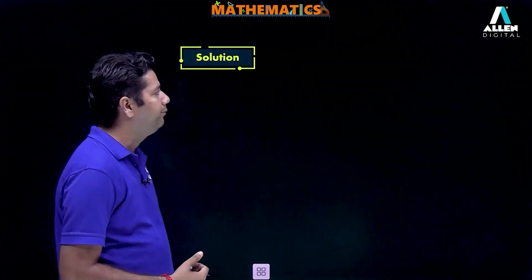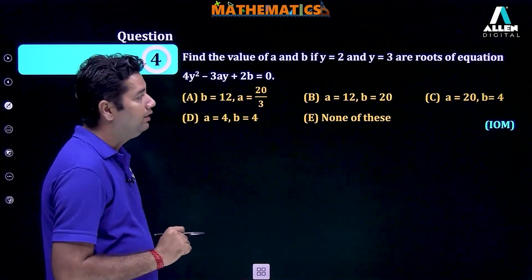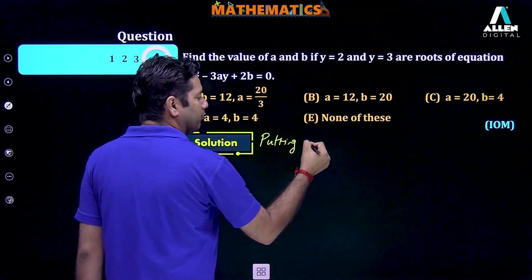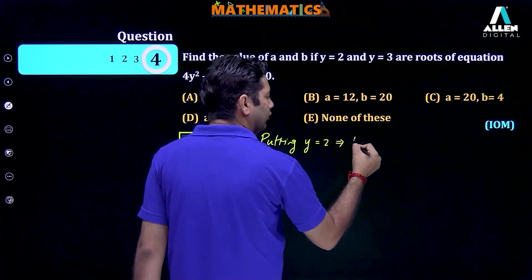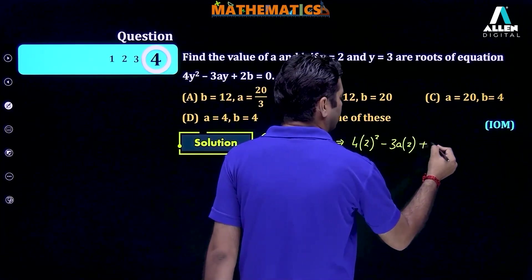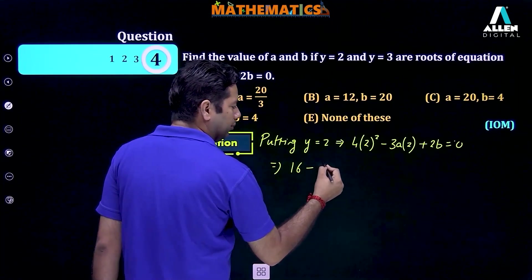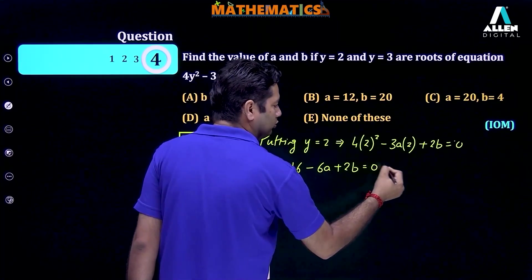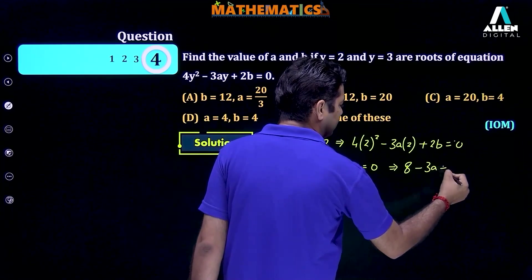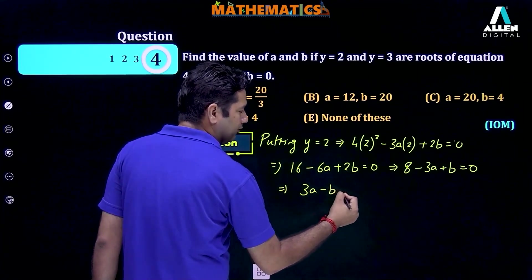Moving to the next question: find the values of A and B if y equals 2 and y equals 3 are the roots of the given equation. This means 2 and 3 will satisfy the given equation. Putting y equals 2: 4 multiply by 2 square minus 3A multiply by 2 plus 2B equals 0, which means 16 minus 6A plus 2B equals 0. Dividing the complete equation by 2: 8 minus 3A plus B equals 0, so 3A minus B equals 8. Marking this as equation 1.